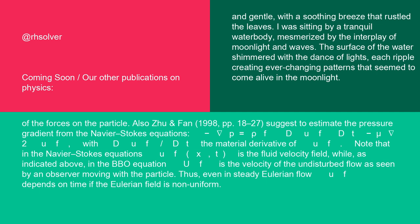in the BBO equation uf is the velocity of the undisturbed flow as seen by an observer moving with the particle. Thus, even in steady Eulerian flow, uf depends on time if the Eulerian field is non-uniform.